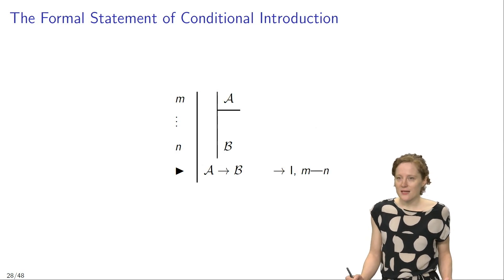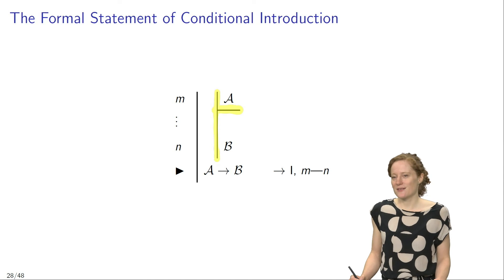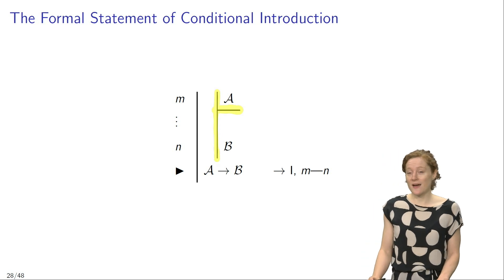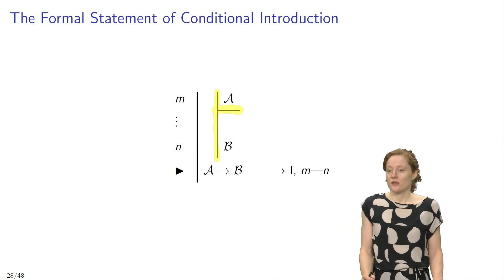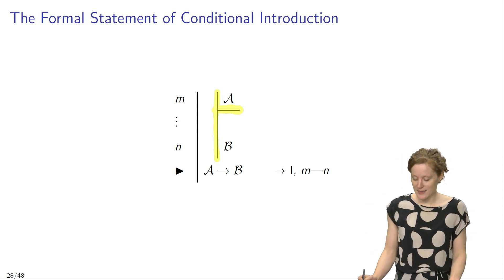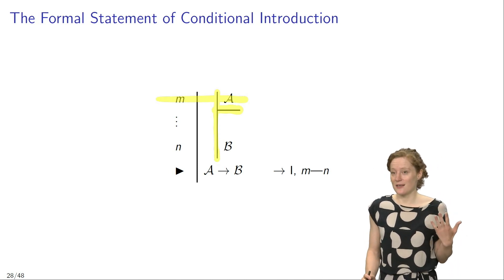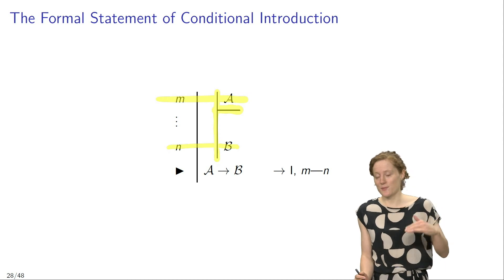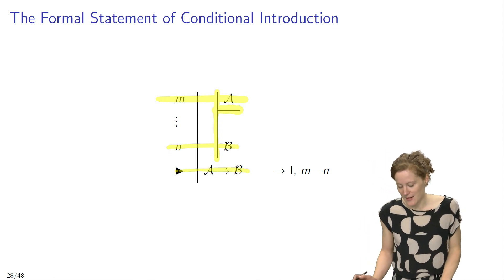In this statement of the rule, you will notice the use of a sub-proof. This second vertical line to the right of our main vertical line introduces a sub-proof into our main proof. We start a sub-proof whenever we introduce additional assumptions. When you use conditional introduction, you introduce an additional assumption — in this case, assumption A — and then show that under that assumption you can infer B. This entire sub-proof, starting with the assumption A and ending with B, licenses you to infer if A then B.